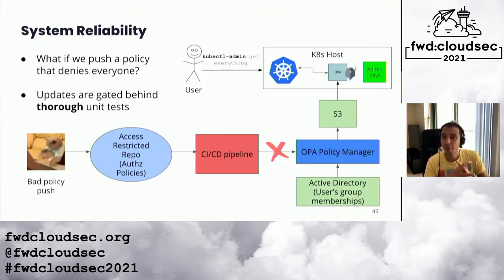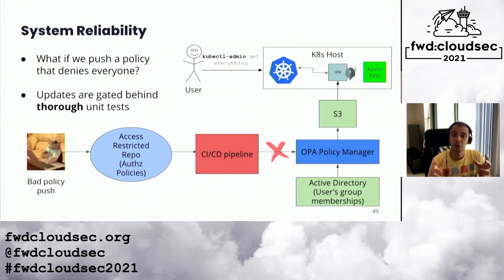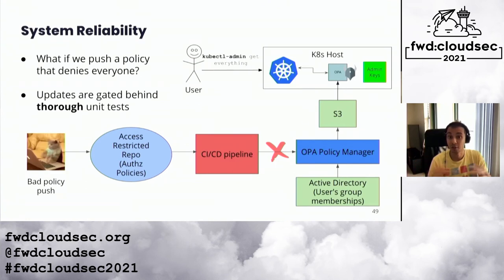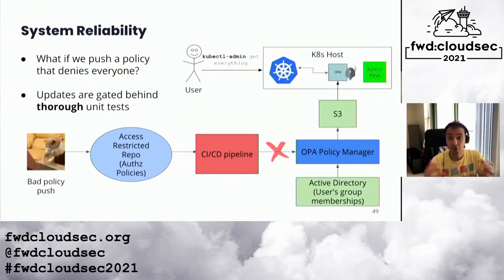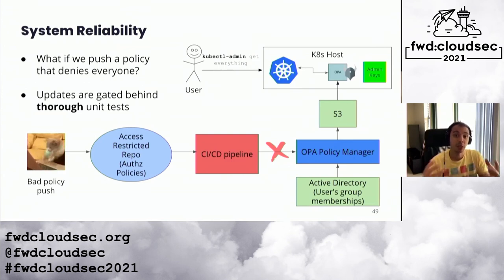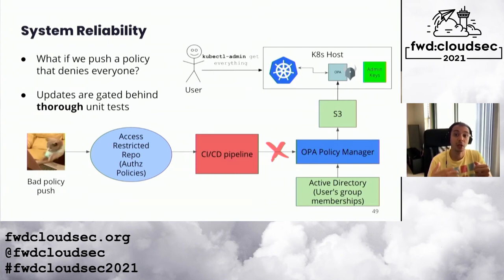First: what if we push a bad policy with catastrophic side effects, like blocking access from all users? We enforce a strict code review process, but nobody's perfect — some bad thing might slip through. In case this happens, we have automated checks in our CI/CD pipeline that will prevent uploading a bad policy bundle into the S3 bucket.